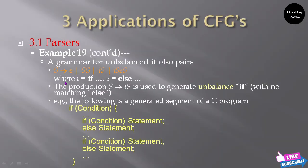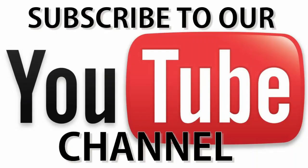A grammar for unbalanced if-else pair: S tends to epsilon, or SS, or iS, or iSeS, where i equals 'if' and e equals 'else'. The production S tends to iS is used to generate an unbalanced if with no matching else. For example, the following is a segment of a C program: if-condition with a statement, and an else statement also. If-condition and an else statement.